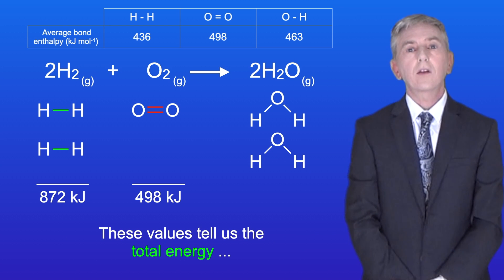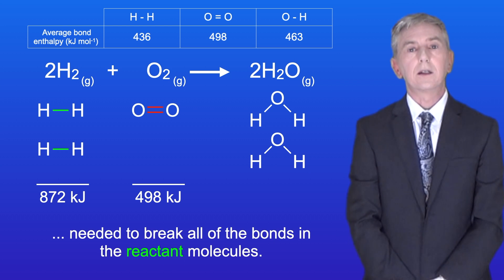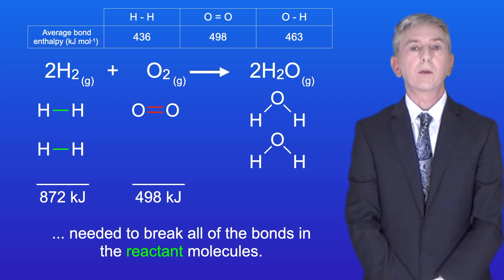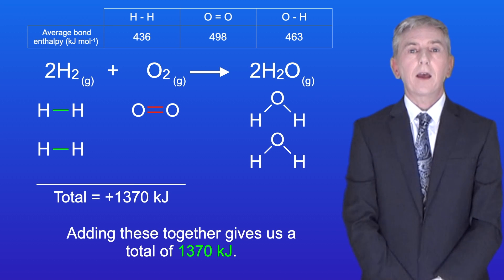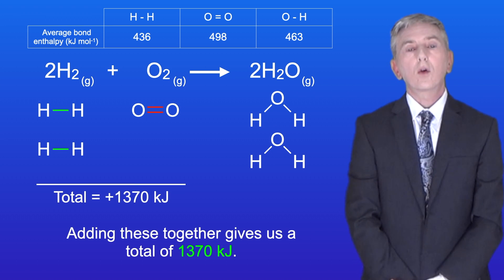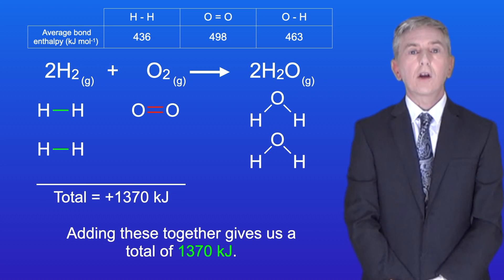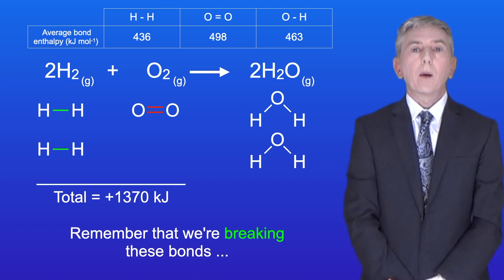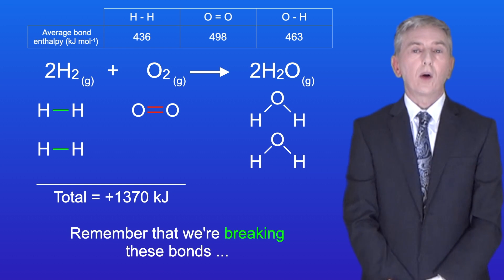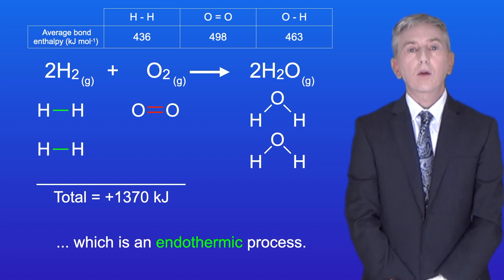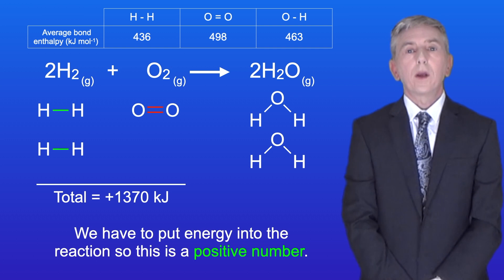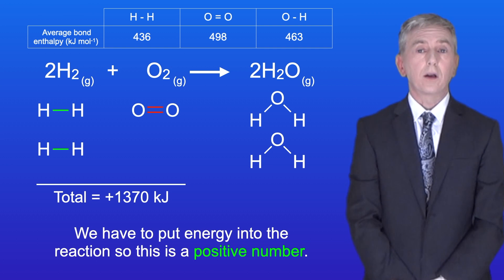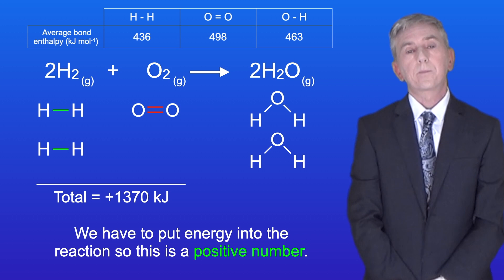These values tell us the total energy needed to break all of the bonds in the reactant molecules. Adding these together gives us a total of 1370 kilojoules. Remember that we're breaking these bonds, which is an endothermic process — we have to put energy into the reaction, so this is a positive number.